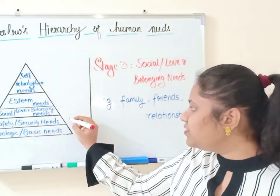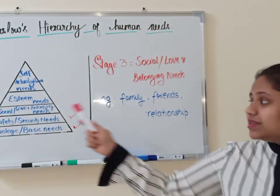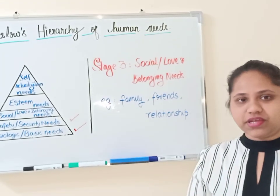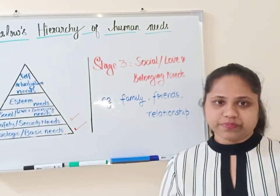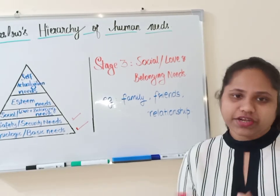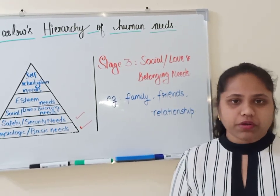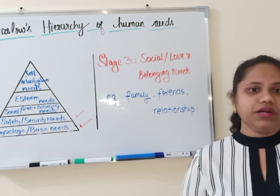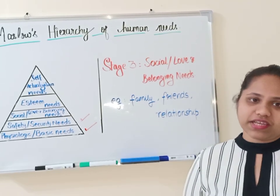Now having fulfilled safety and security needs, we move to social or love and belonging needs. The main focus of this stage is on building relationships with people — your family members, your wife, husband, children — finding people who share similar interests, building trust, love, and affection with them. When you find a job you meet people with similar interests, make friendships, and build relationships. This is what happens in the third stage.